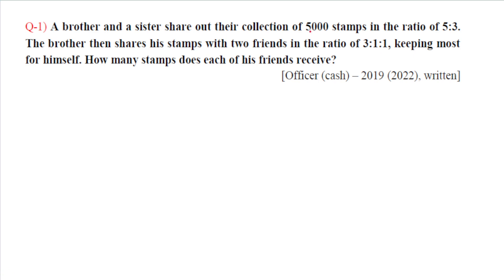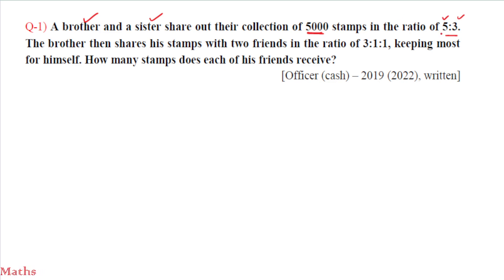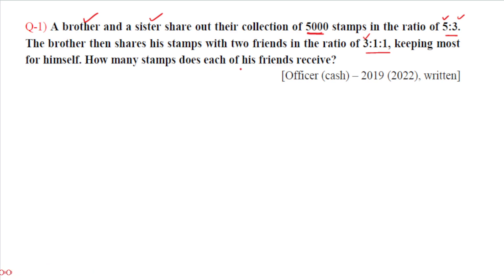In this problem, the brother and sister distribute in a 5 to 3 ratio — so the brother gets 5 parts and the sister gets 3 parts. Then the brother distributes his share further in a 3 to 1 to 1 ratio, keeping 3 parts for himself and giving 1 part each to his two friends. We need to find how many stamps each friend receives.